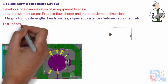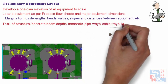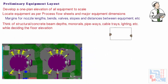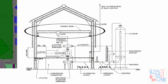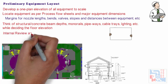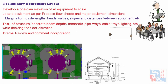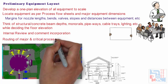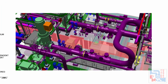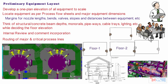He must also think of structural or concrete beam depths, monorails, pipeways, cable trays, and lighting while deciding the floor elevation. This one-plan elevation view should be discussed internally and then with the process engineering group, who will check relative locations and elevations of the equipment. Routing of major and critical process lines should also be discussed at this stage. After deciding floor elevation and number of floors, work can be started on preliminary arrangement drawings, which should show each floor plan as well as elevation views at different sections.